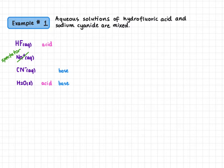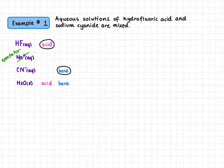Now that we've classified, we look for our strongest acid and strongest base. Our strongest acid has the highest Ka value. The Ka of hydrogen fluoride is stronger than the Ka of H₂O, so our strongest acid is hydrogen fluoride. Our strongest base is cyanide — looking at the table, cyanide is closer to the bottom of the base column, meaning it has a higher Kb value.